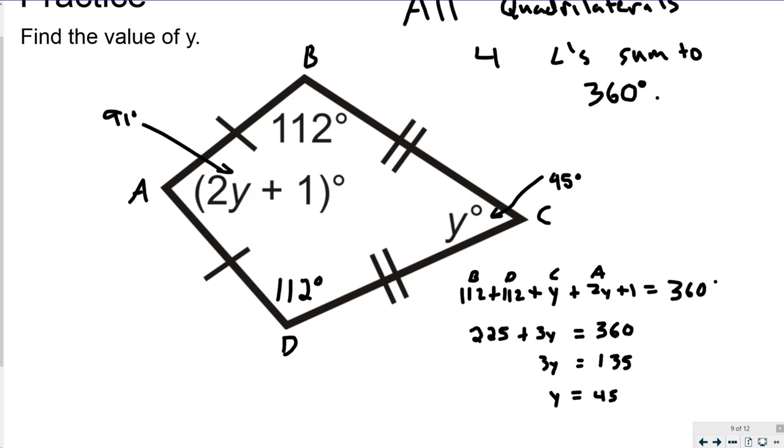And if you add all these measures together, 91, 112, 112, and 45, you will get 360.